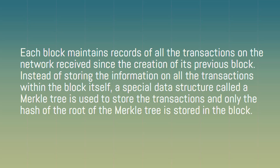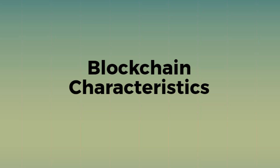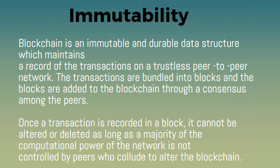Blockchain characteristics — Immutability: blockchain is an immutable and durable data structure which maintains a record of transactions on a trustless peer-to-peer network. The transactions are bundled into blocks and the blocks are added to the blockchain through a consensus among the peers. Once a transaction is recorded in a block, it cannot be altered or deleted.